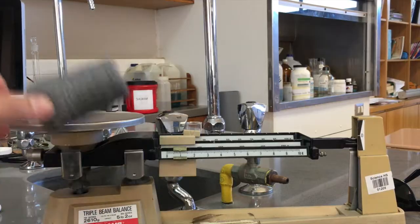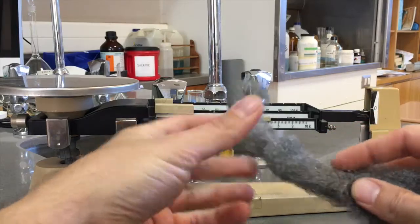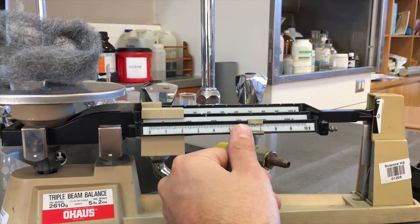So just a little refresher on what we did for the Steel Wool Stretch Experiment. We took a piece of steel wool and we weighed it, then we stretched it out, and then we saw if there was a difference in the mass.